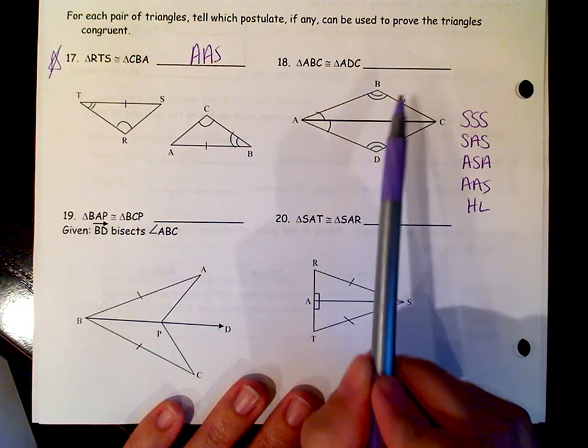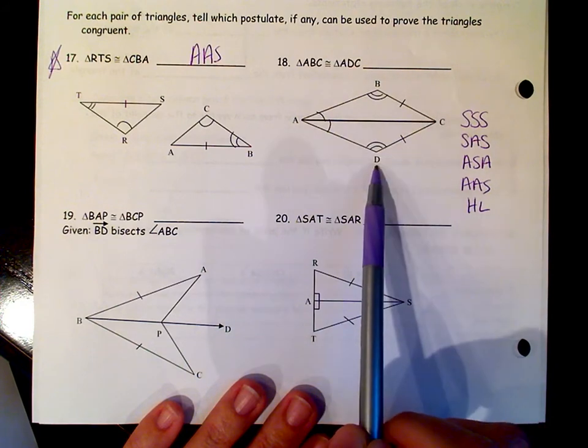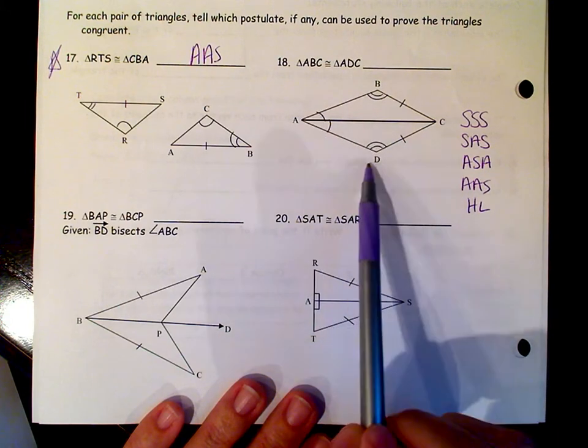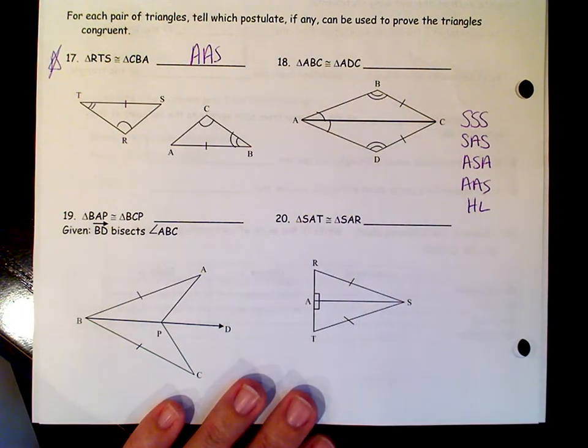Those are marked. Angle B and angle D are congruent to each other. And angle BAC and DAC are also congruent to each other.